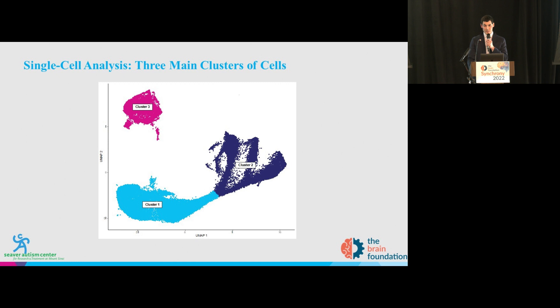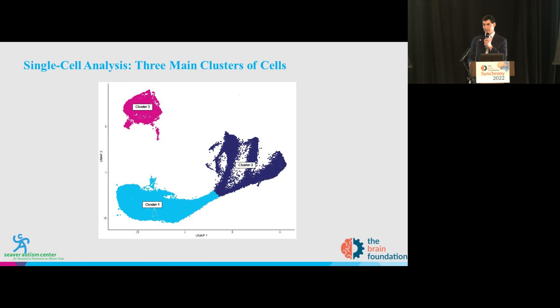Moving on to results: the most important result is that the CRISPR-I worked. We were trying to target 75 genes at once, and we were able to successfully knock down the expression of all of the genes on this plot. The takeaway is the blue diagonal. Using DDX3X as an example: DDX3X was reduced specifically in the set of cells that received the guide RNA targeting that gene — and that's true for each of the genes along the diagonal.